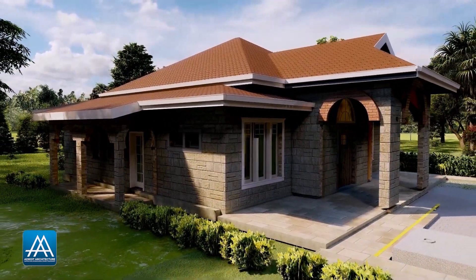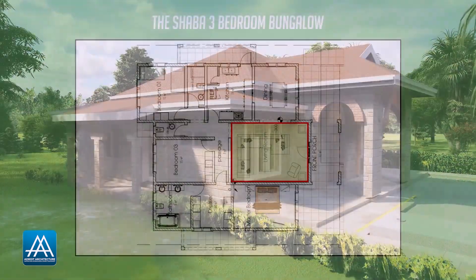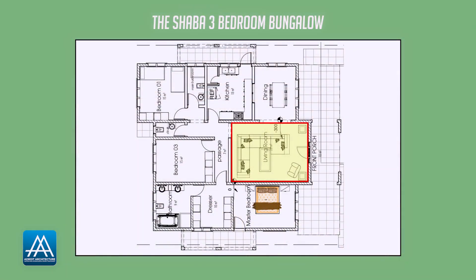The arched front porch ushers you directly into the living room. As always, we ensure that the lounge is of a good size to take in all your furniture and leave you with enough circulation space. The dining area and the kitchen sit on the other side of the lounge, nice and spacious. You can access one of the side porches from the kitchen.